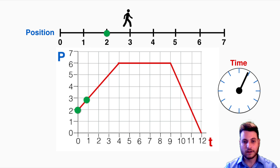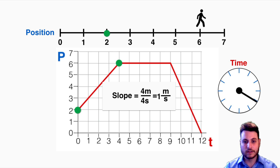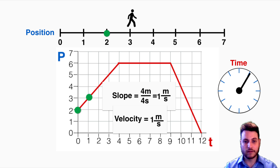Looking through this graph, for the first section the person is moving at 1 meter per second because they have a slope of 4 over 4 — a rise of 4 meters and a run of 4 seconds. So their velocity is 1 meter per second, meaning for every 1 second they travel exactly 1 meter.